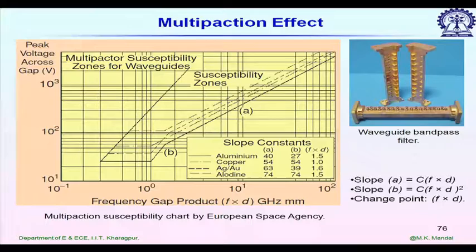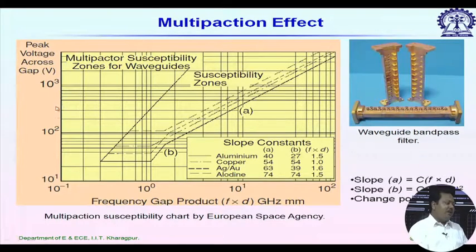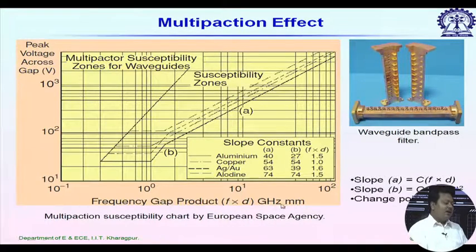Instead, what people do is use a chart. This chart is given by the European Space Agency — they did experiments for different types of metal, different gaps between two plates, and different voltage values, and produced this chart. It shows peak voltage across the gap along the Y-axis, and along the X-axis it is the frequency-gap product. It not only depends on frequency but also on the gap between the two plates. The unit is gigahertz-millimeter.